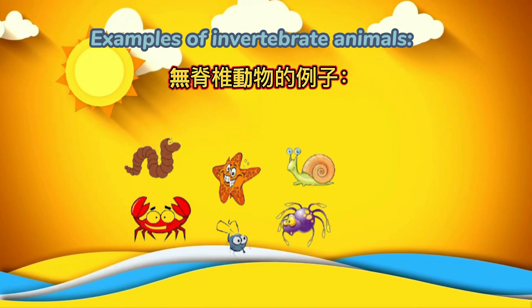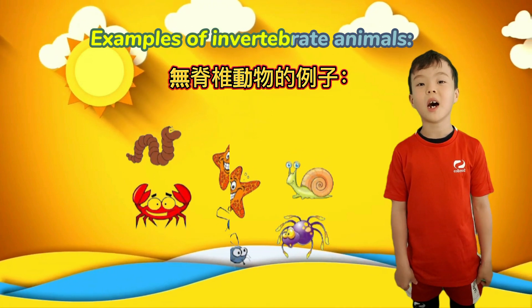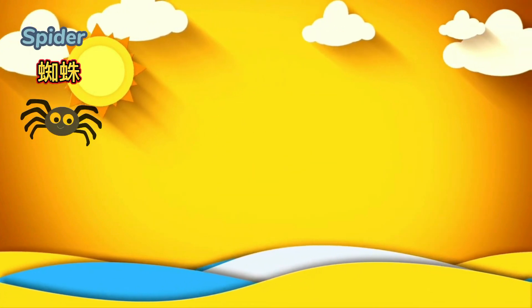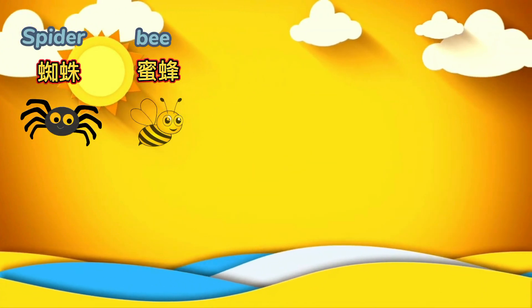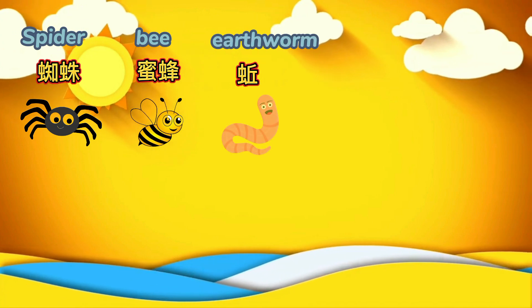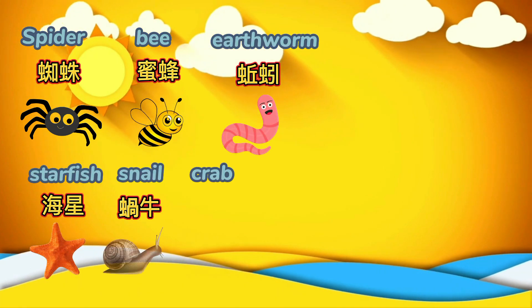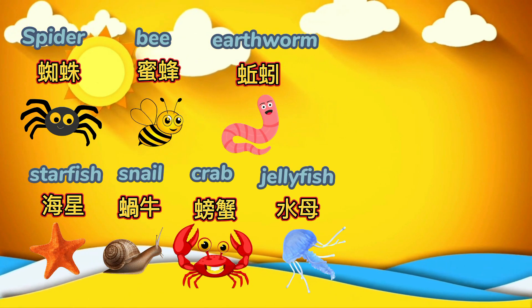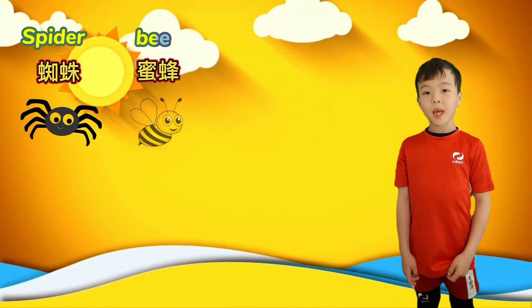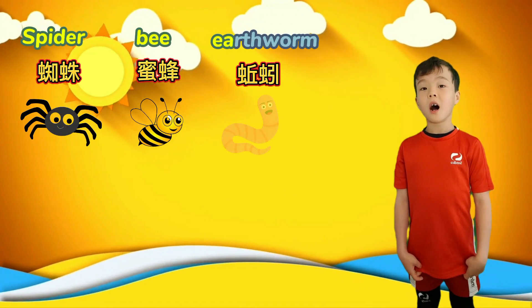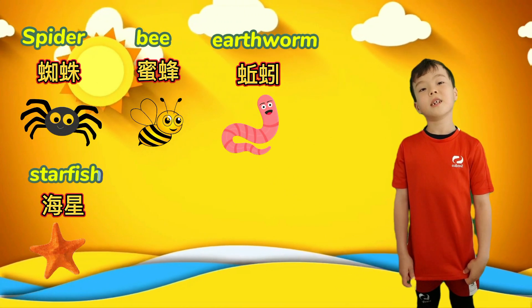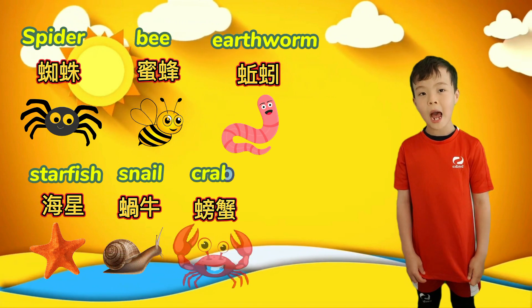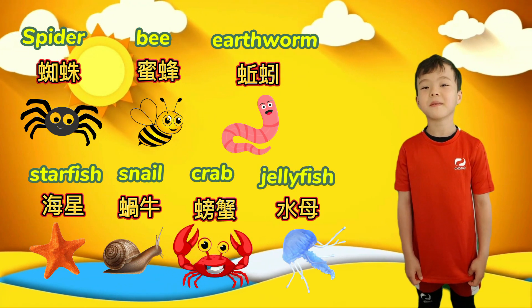Examples of invertebrate animals: Spider, bee, earthworm, starfish, snail, crab, jellyfish.